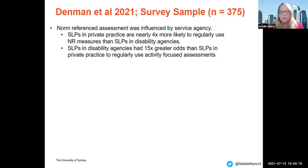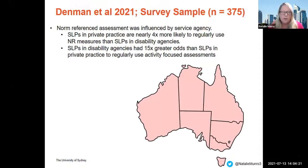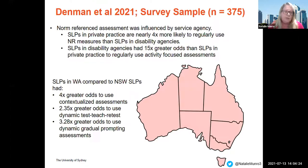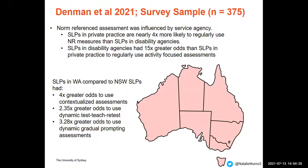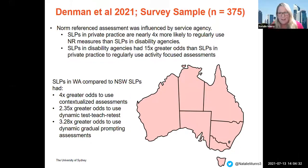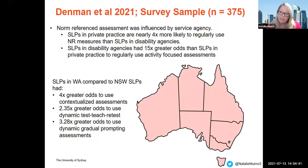We also found some geographical differences. Speech pathologists in WA compared to NSW had four times greater odds of using contextualised assessments such as language sampling, 2.35 times greater odds of using dynamic test-teach procedures, and three times greater odds of using dynamic gradual prompting assessments.